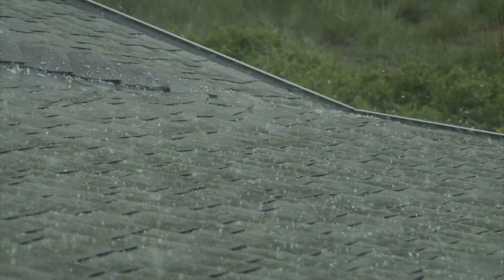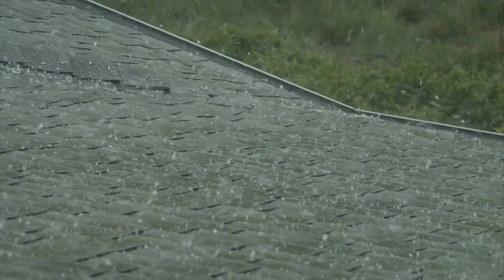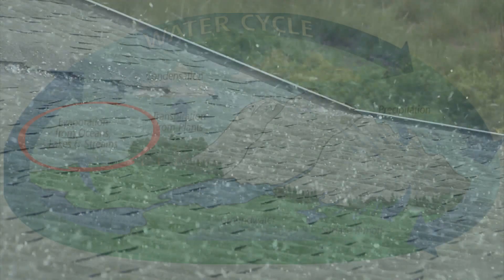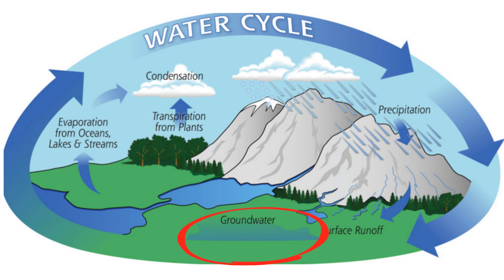Once this water reaches the ground, one or two processes may occur. Some of the water may evaporate back into the atmosphere, or the water may penetrate the surface and become groundwater.